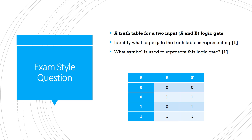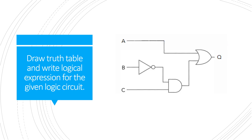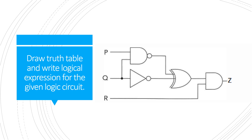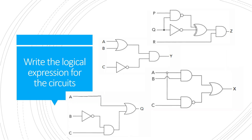Here I have represented a truth table for two inputs A and B. Identify what logic gate the truth table is representing and what symbol is used to represent it. The output is 0, 1, 1, 1 — so it can be OR, because OR says that if any one condition is true, the output turns ON. Now try to draw the logic circuit, write down the logical expression, and make a truth table for these given logic circuits.